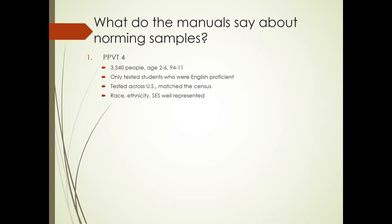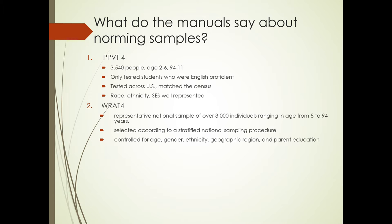They were tested across the United States that matched the census. And in all other cases, it was well represented as a diversity of the U.S. The RAT-4 used a representative national sample of over 3,000 individuals, ranging from age 5 to 94. So again, there was a large number per age level. They controlled for many different characteristics. And so again, it was well normed nationally.